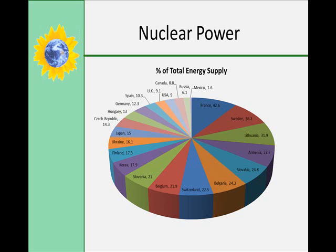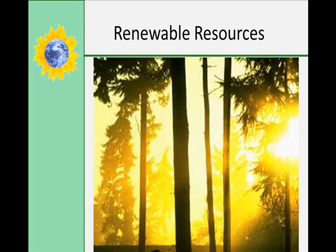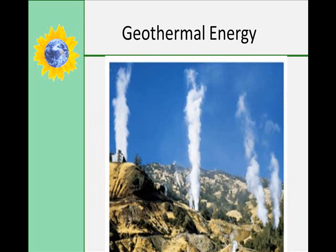Now let's talk about renewable energy resources. The first one is geothermal energy. The word geothermal comes from the Greek words geo for earth and thermi for heat. Geothermal energy is heat from within the earth — we use steam and hot water produced inside the earth to heat buildings or generate electricity. It's a renewable energy source because water is replenished by rainfall and heat is continuously produced inside the earth. The most active geothermal resources are usually found along major plate boundaries, concentrated in an area called the Ring of Fire around the Pacific Ocean.